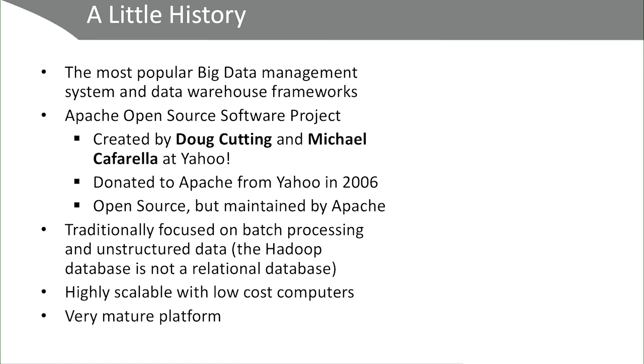Hadoop is traditionally focused on batch processing, which means it's not really well suited for real-time processing, at least in its first version. It is very scalable — you can put tens of thousands of computers all part of the same processing job, with really no fixed limitation on how much distributed and parallel processing Hadoop can accomplish. It's also a very mature platform because it's been out there for many years, with a very big community of developers and very well documented.